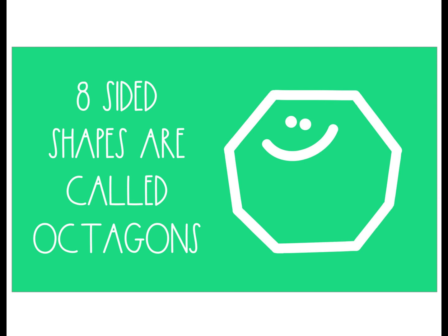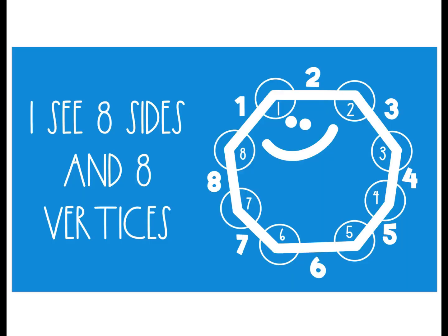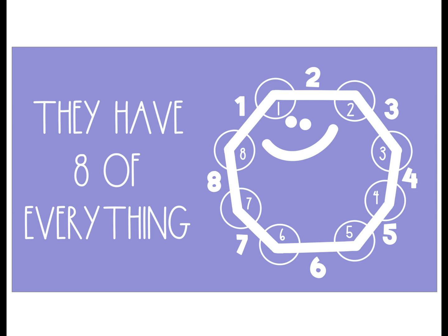Eight-sided shapes are called octagons. They have eight of everything. I see eight sides and eight vertices — they have eight of everything.